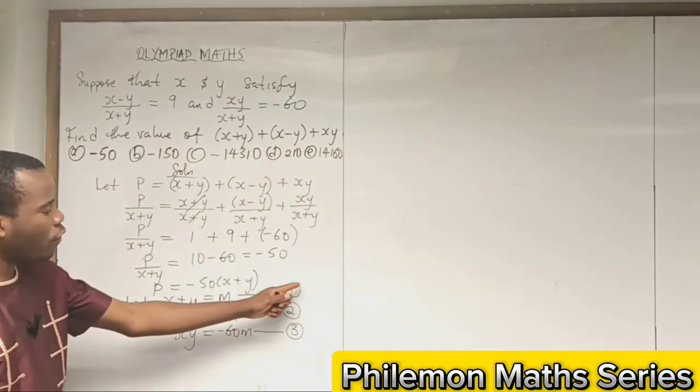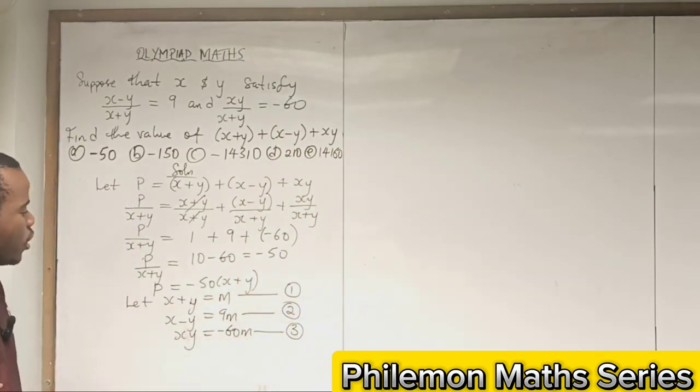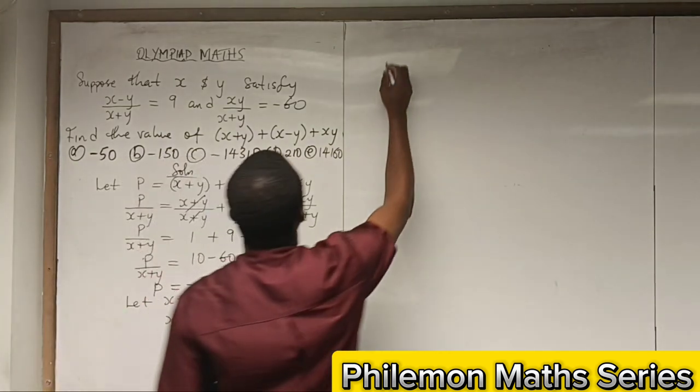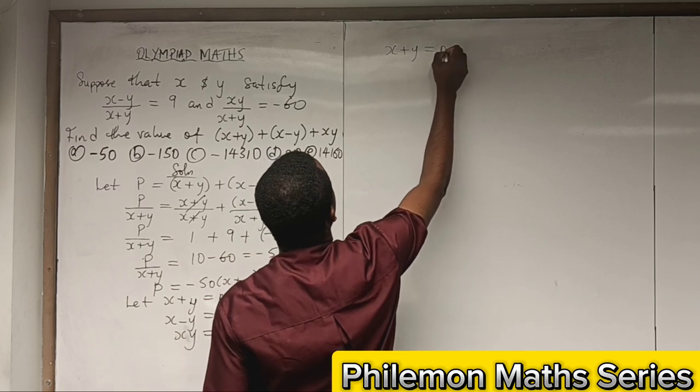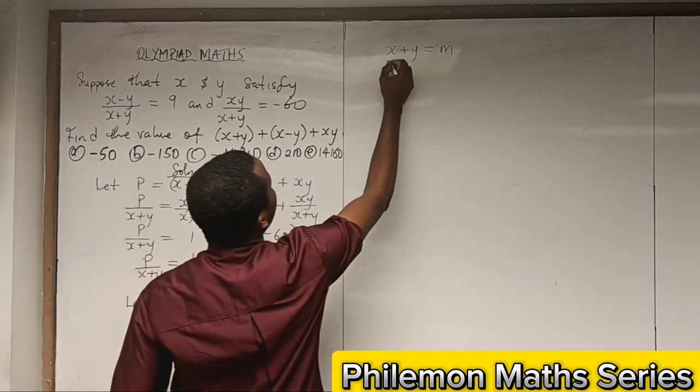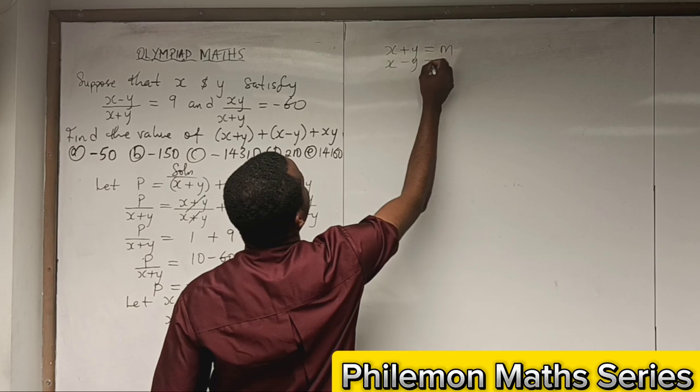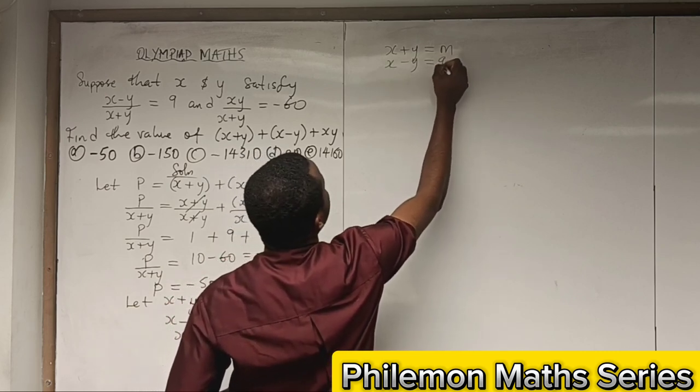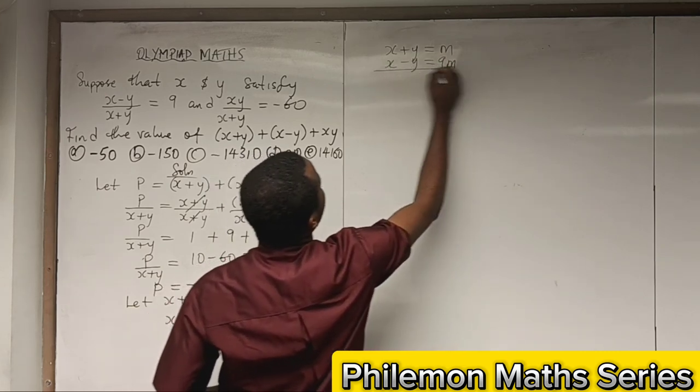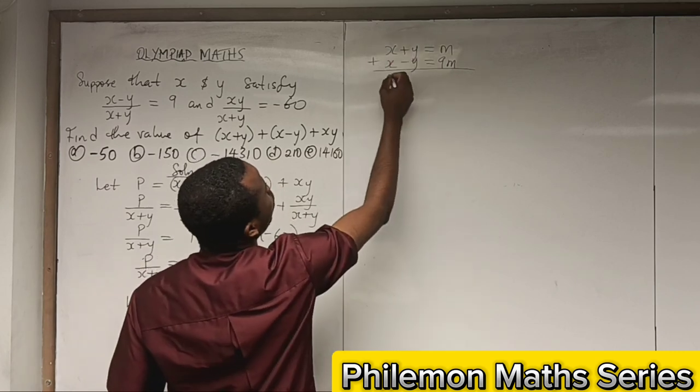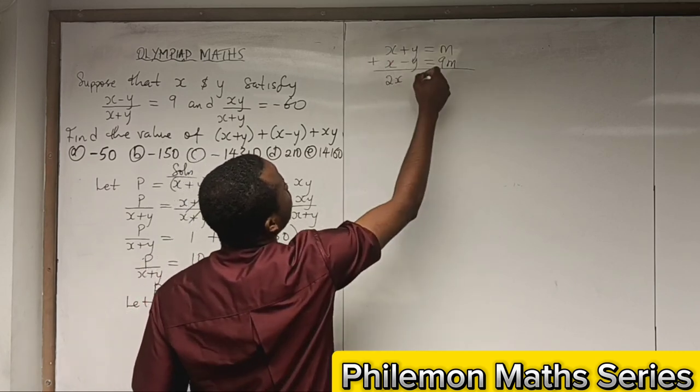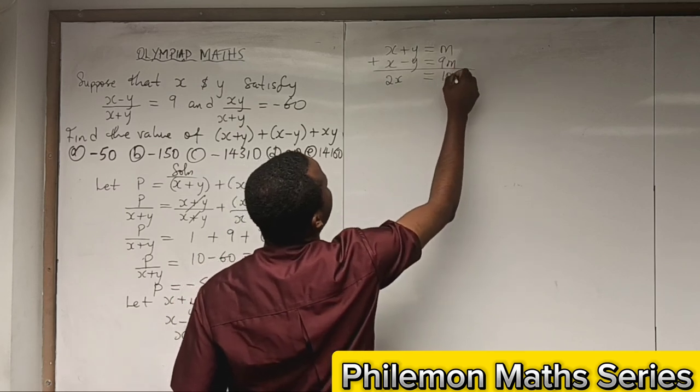Let's solve equations 1 and 2 simultaneously. We will have x + y = m and x - y = 9m. We can add both so we have 2x = 10m.